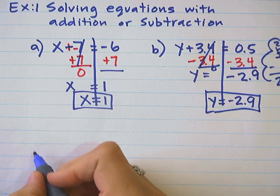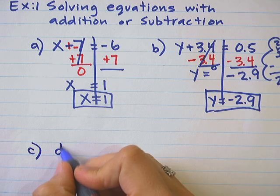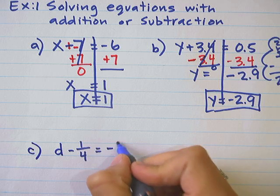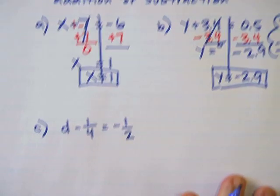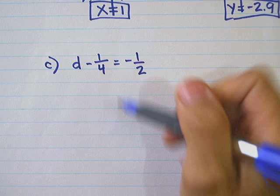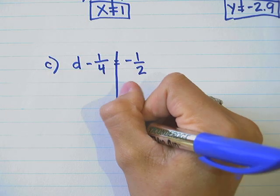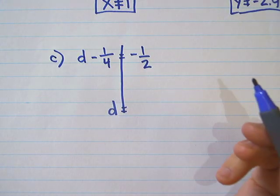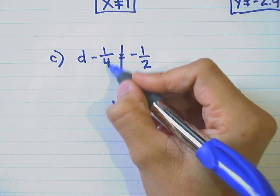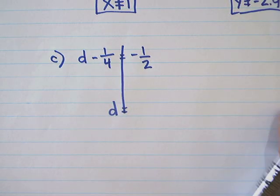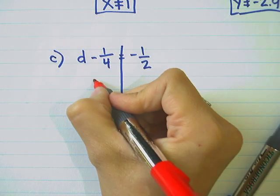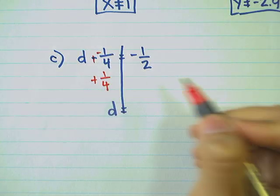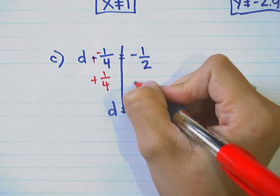The next problem sometimes involves a fraction. We're trying to solve for D, and the goal is to get D all alone on the left side — usually the side where it already is. I have to reverse this subtraction of 1 fourth. The opposite of subtracting 1 fourth is adding 1 fourth. Or if you have this as a negative 1 fourth, then you want to put a positive 1 fourth. What you do to one side, you do to the other.